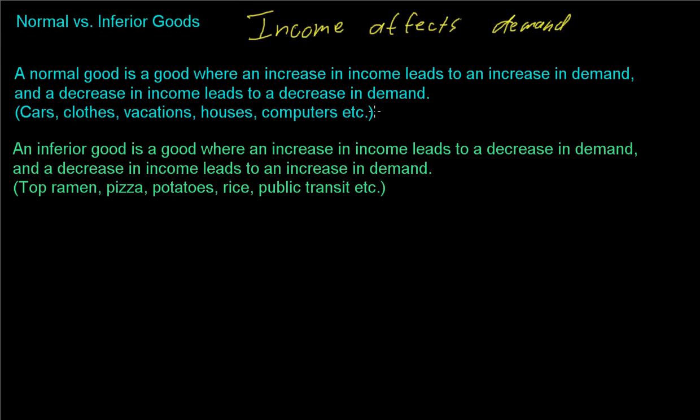So said simply, these are things that if you have more money you buy more of and if you have less money you buy less of. So common examples are cars, clothes, vacations, houses, computers, and I'd say a large majority of goods are normal goods that you buy less of if you have less income and you buy more of if you have more income.